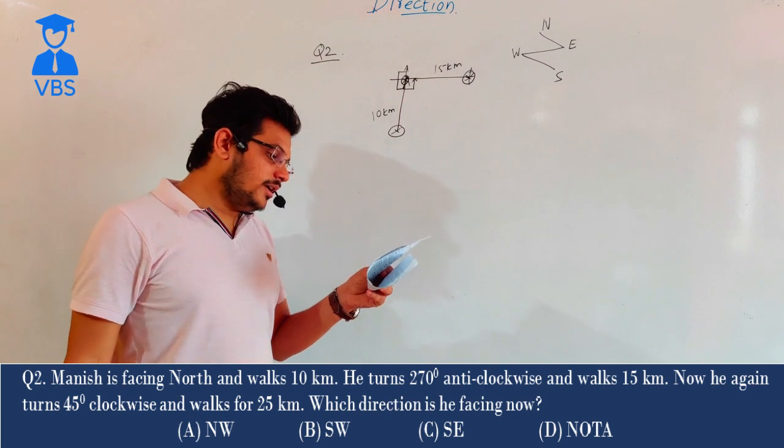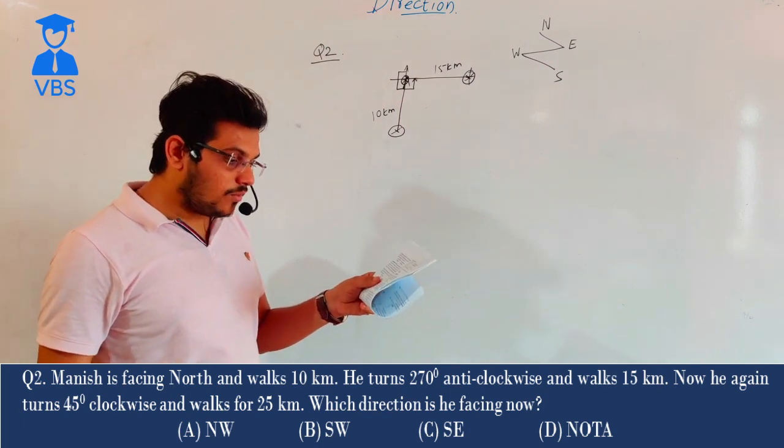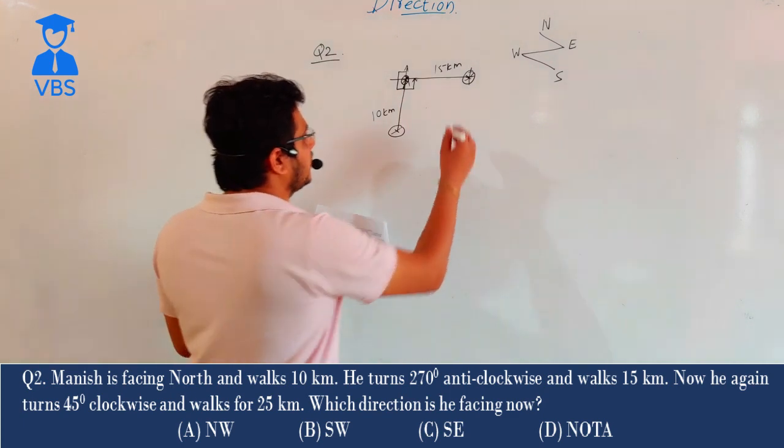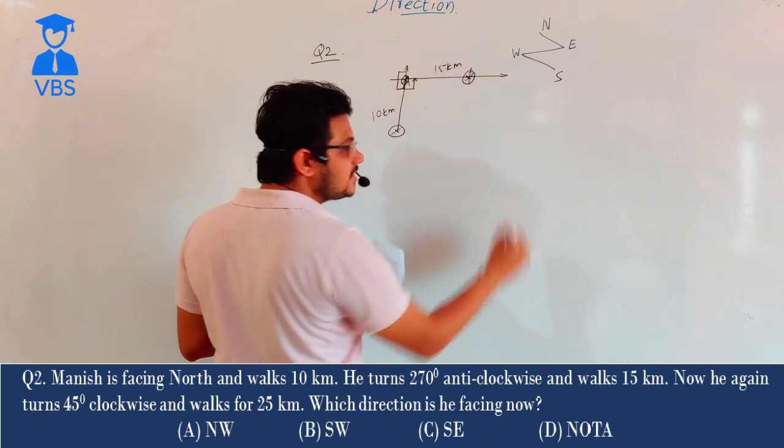Next, now he again turns 45 degrees clockwise and walks 25 km. Now he turns facing where? East direction.